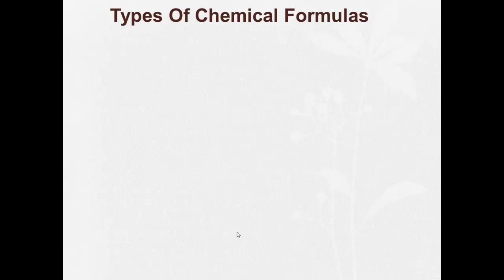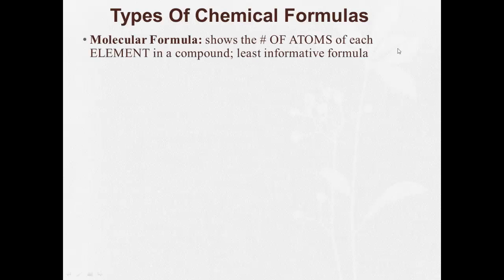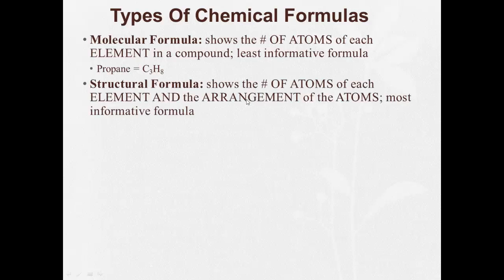You're going to have to learn about different types of chemical formulas here. So molecular formulas we're used to, where they simply show the number of atoms of each element in a compound. It doesn't tell you much. With certain types of things, ionic compounds, it tells you enough, but especially when we get to organic chemistry, these don't really tell you a lot. Structural formulas are going to show the number of atoms of each element and the arrangement of the atoms. These are much more informative. So here's a molecular formula for propane. Here's a structural formula for propane, and we can see how everything is laid out.